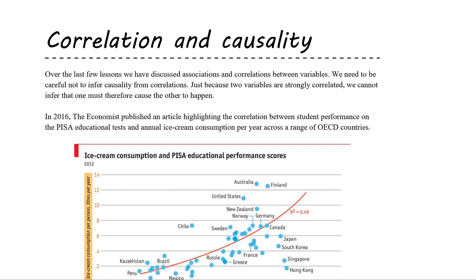Today will be a brief video talking about the difference between correlation and causation. In the last few lessons we've discussed associations between variables and correlation between variables, and we've started to learn about the idea of the correlation coefficient as a way to describe the strength of the association or the strength of the correlation between two variables.